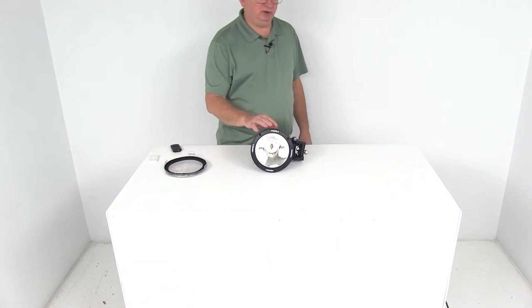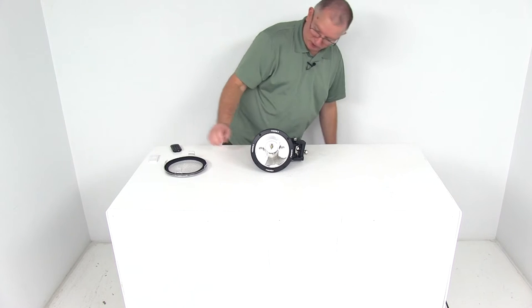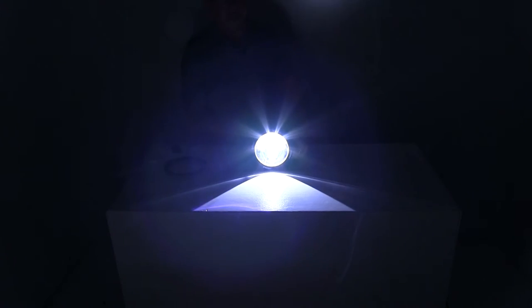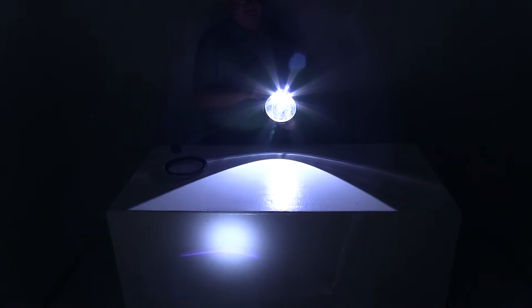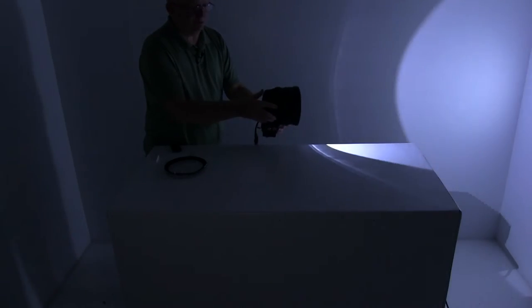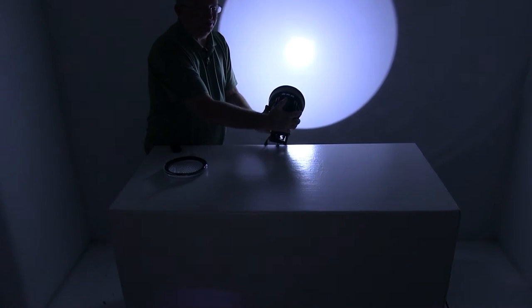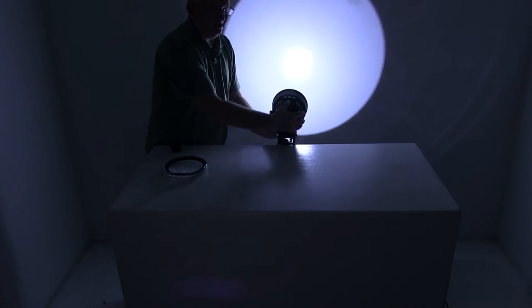First we're going to show you this light with its normal spot beam. We'll turn off the overhead lights and turn on the power. You can see the spot beam it gives off. Then we'll rotate it around. You can see it on the wall. There's your spot beam to give you an idea what that looks like.